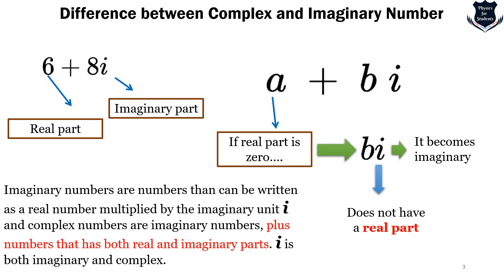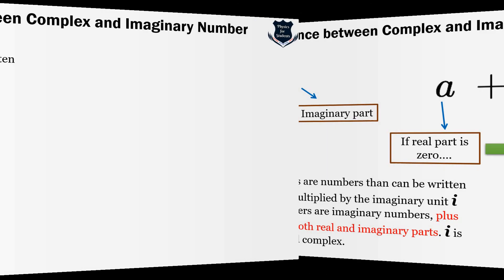To summarize: imaginary numbers are numbers that can be written as a real number multiplied by the imaginary unit i, while complex numbers include imaginary numbers plus those that have both real and imaginary parts. So every imaginary number is also a complex number.